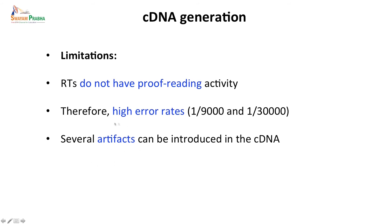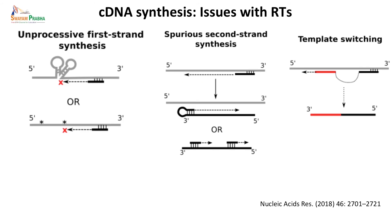This probability of error is dealt with by sequencing multiple clones and multiple plaques to determine which one has the correct sequence. Several other artifacts can also be introduced using reverse transcriptase. The first problem is that if there are GC-rich regions or the transcripts have a lot of secondary structure due to intrastrand annealing, the reverse transcriptase may not be able to resolve these secondary structures. It may just stop or fall off, and because of its limited processivity, you may not get complete cDNA molecules.